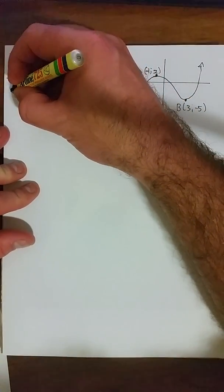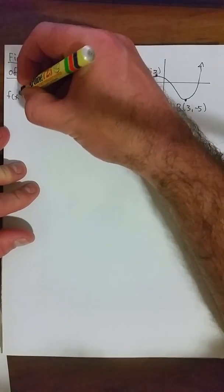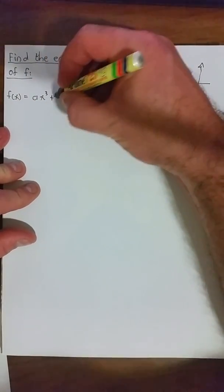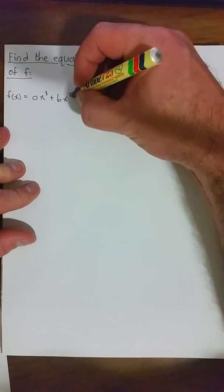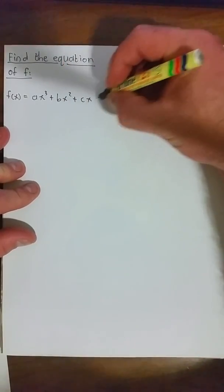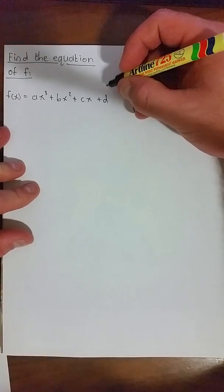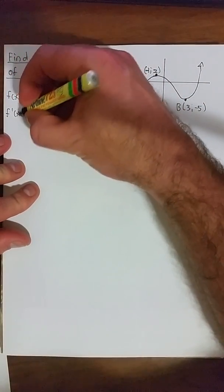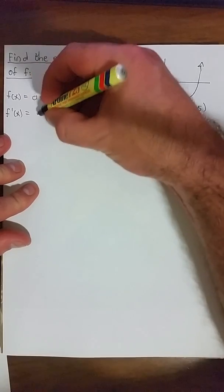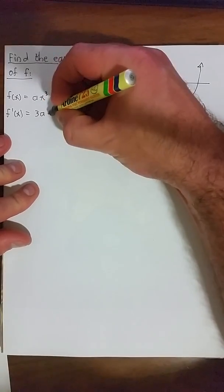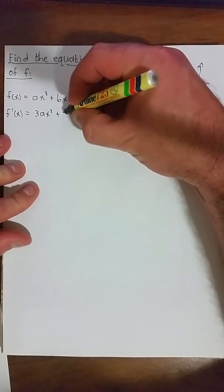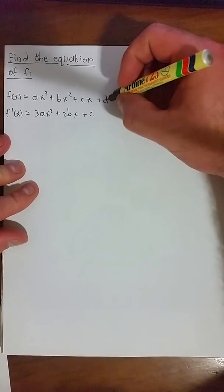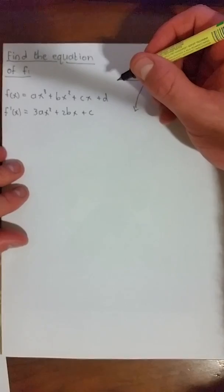First thing we need to know is what is the standard form of a cubic function, and that is f(x) = ax³ + bx² + cx + d. We also need to know what the first derivative is. f'(x) is equal to 3ax² + 2bx + c, and the constant d falls away, or equals 0.